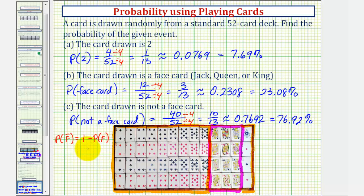This is true because we know the probability of selecting a face card, plus the probability of not selecting a face card, would be equal to one or 100%. So we can use this formula to find the same probability.